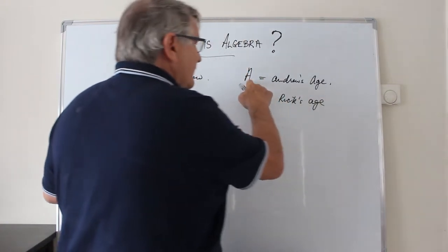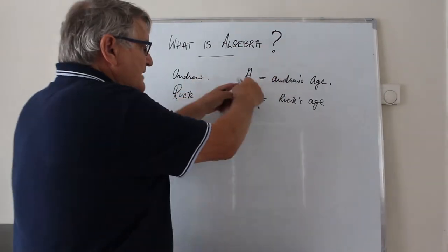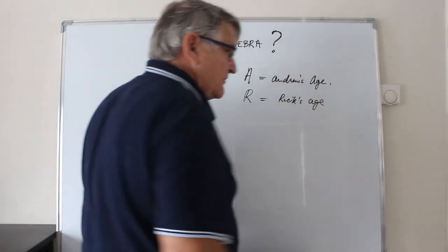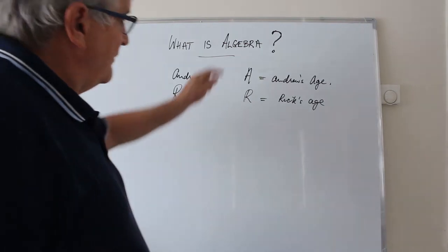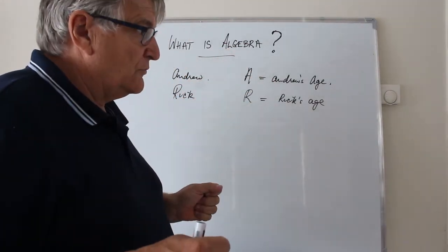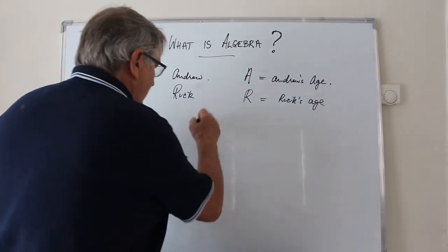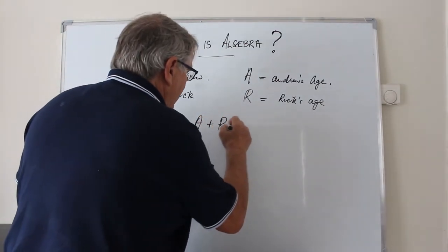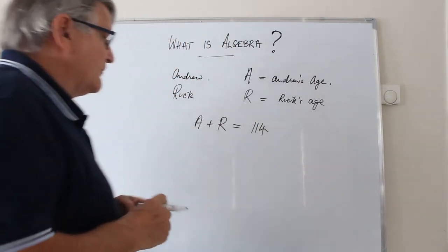Now it's not a label. It's not a for Andrew. The a is a number that represents Andrew's age. And we know that Andrew's age and my age add to 114. So a plus r is equal to 114.